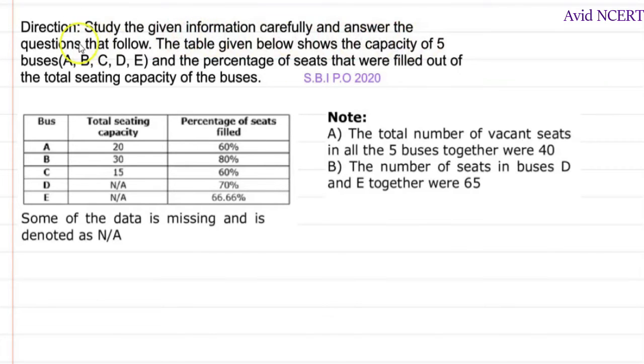Study the given information carefully and answer the questions that follow. The table given below shows the capacity of 5 buses A, B, C, D, E and the percentage of seats that were filled out of the total seating capacity of the buses. Some of the data is missing and is denoted as NA, not available. Note: the total number of vacant seats in all the 5 buses together were 40, and the number of seats in buses D and E together were 65.